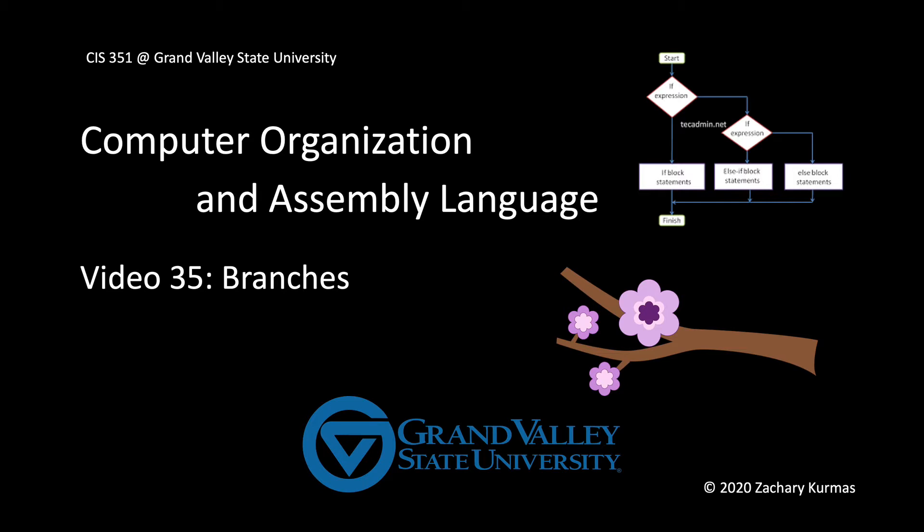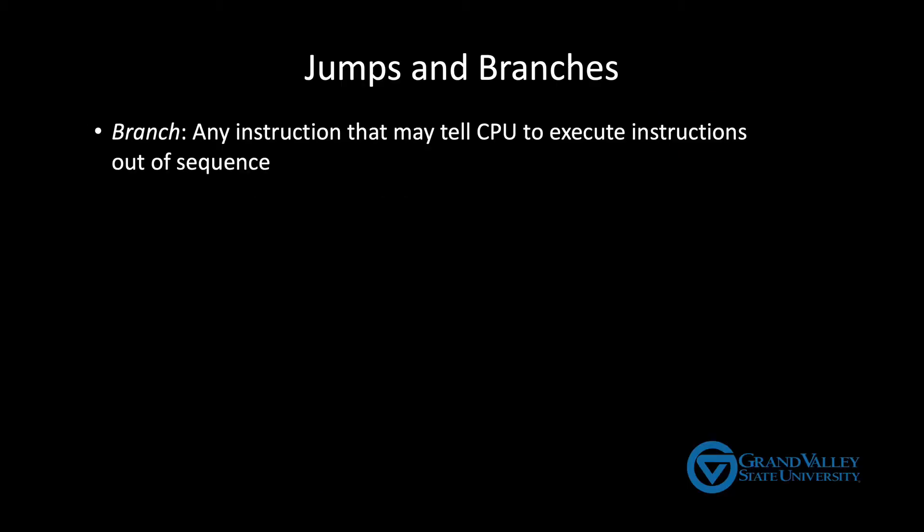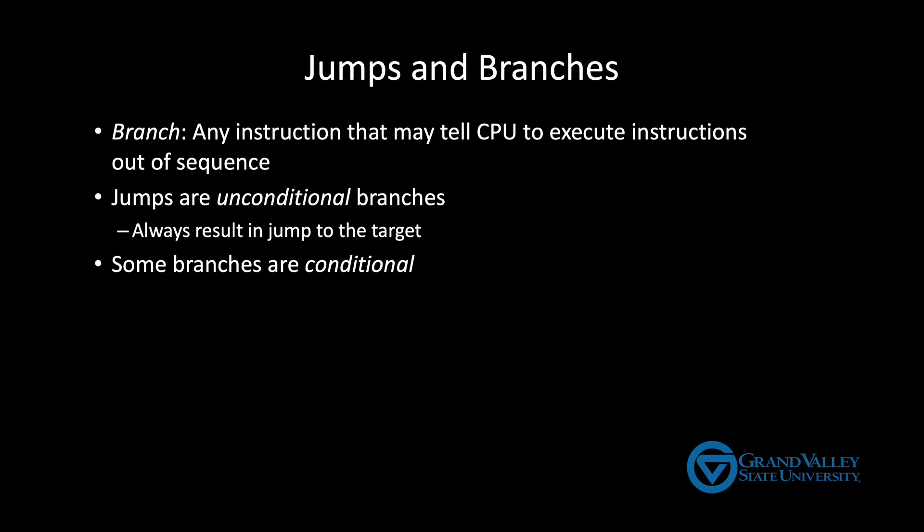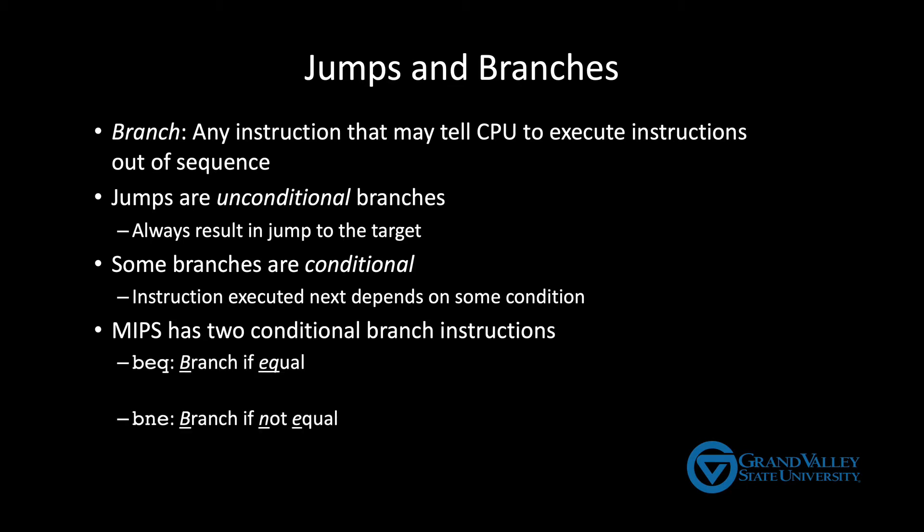In general, we can use the term branch to refer to any instruction that tells the CPU to execute something other than the next instruction in memory. Jump instructions are unconditional branches. They always result in a jump to the target address. A branch is called conditional if whether the program flow changes depends on some condition. MIPS provides two conditional branch instructions: branch if equal and branch if not equal.